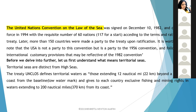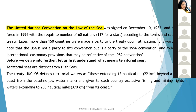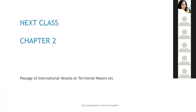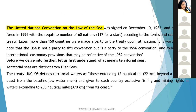Before we move further, let us understand what territorial seas means — a term you will hear a lot in this subject. UNCLOS, the United Nations Convention on the Law of the Sea, defines territorial waters as those extending 12 nautical miles — that is 22 kilometers — beyond a country's coast from the baseline low water mark. It gives each country exclusive fishing and mining rights in waters extending to 200 nautical miles — that is 370 kilometers — from its coast.